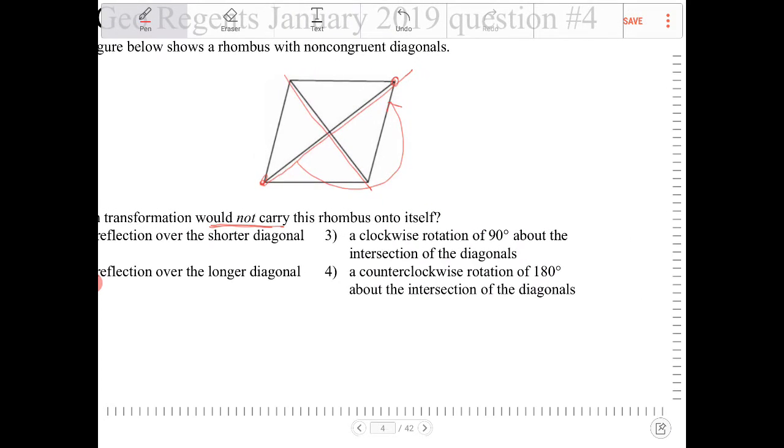A clockwise rotation of 90 degrees. Ah, we have our winner here. So this will not carry the rhombus onto itself because 180 degrees will. So it's option three.